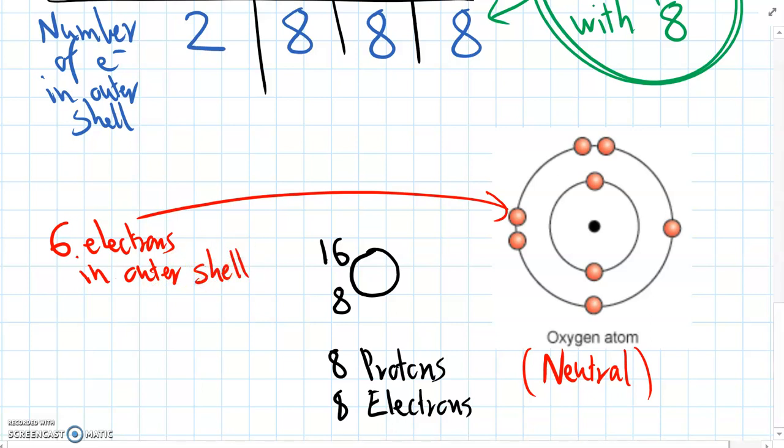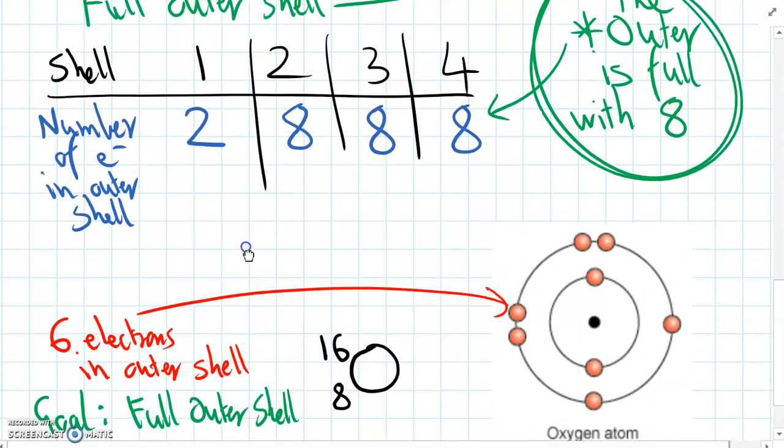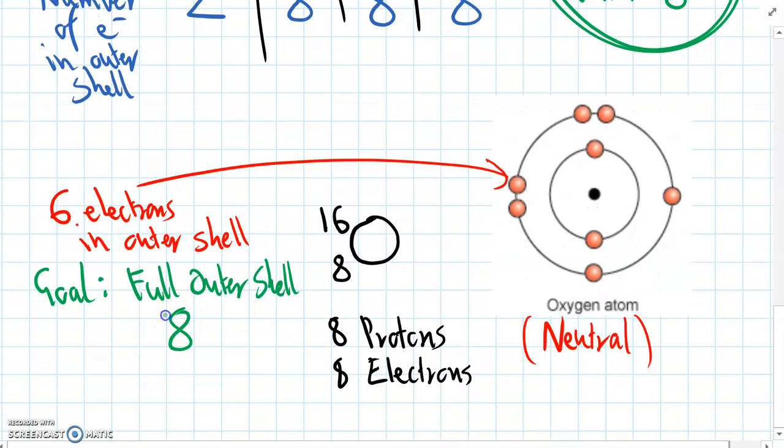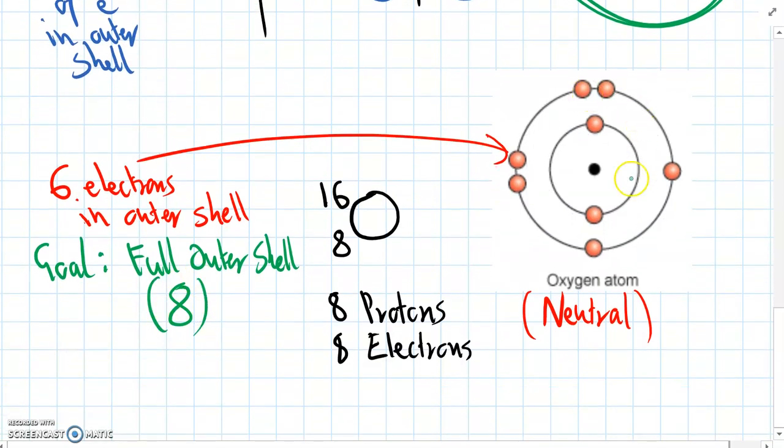So six electrons in the outer shell, but the goal, remember, the goal is to get to a full outer shell. And at the moment, the outermost shell is the second shell, and the second shell can only hold eight. So we're aiming for eight.